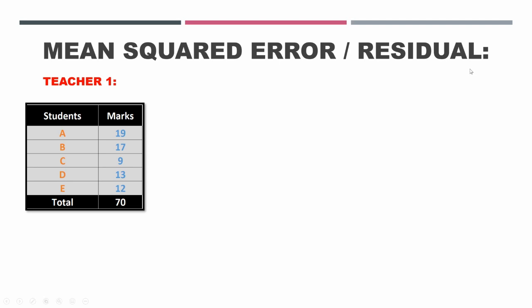So for teacher 1, these are the students that were allotted to her and these are their marks. What the principal did is he drew a number line and plotted the mean marks and also the marks scored by individual pupils.